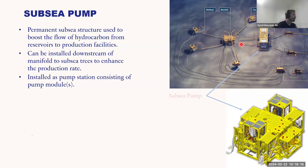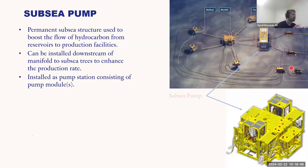The subsea pump is installed as part of the permanent structure, downstream of the manifold. Wells tie to the manifold, and the manifold ties to the pumping unit. You have all these flow lines, hydraulic and electrical termination lines connecting different parts of the development.